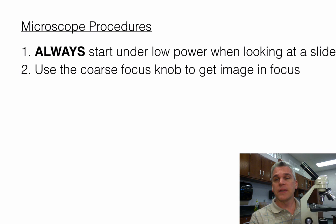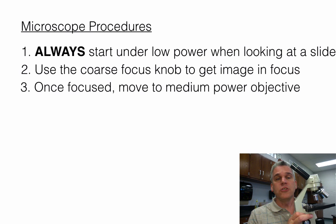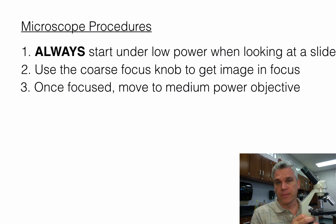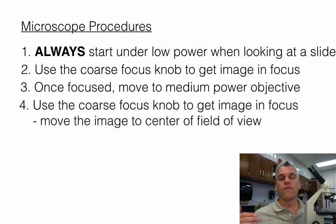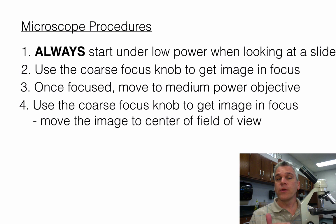Primarily you're going to be using the coarse focus knob, especially under low and medium power. Once you have the object in focus, then you can move it to medium power — never go from low to high, always go from low to medium. Focus it under medium power, and if you have the object centered in your field of view — the round part that you see — when you then turn it to high power it should already be in focus.